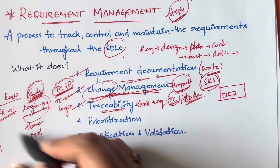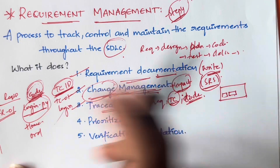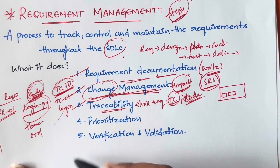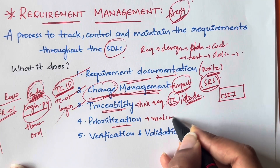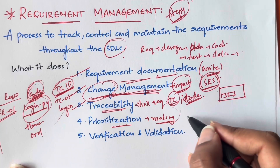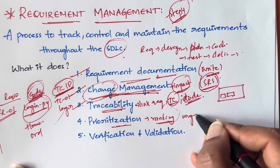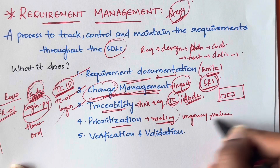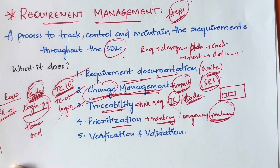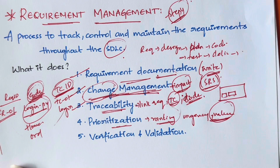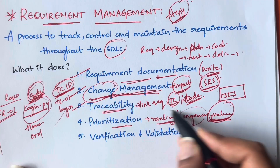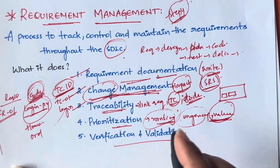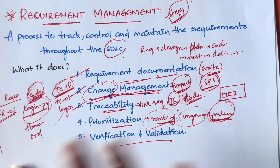Next is prioritization. You will be ranking the requirements based on business value and urgency — how much value a requirement adds to the business, how much profit it generates, or how many more customers it brings. Based on both business value and urgency, you prioritize and give each requirement a rank.